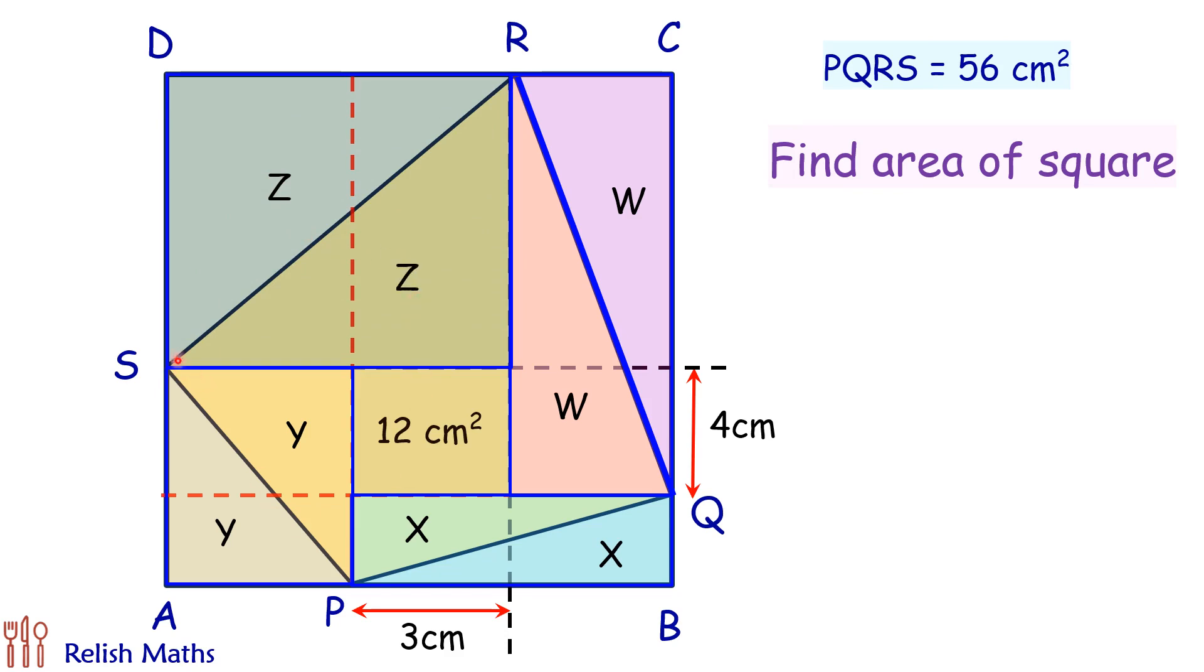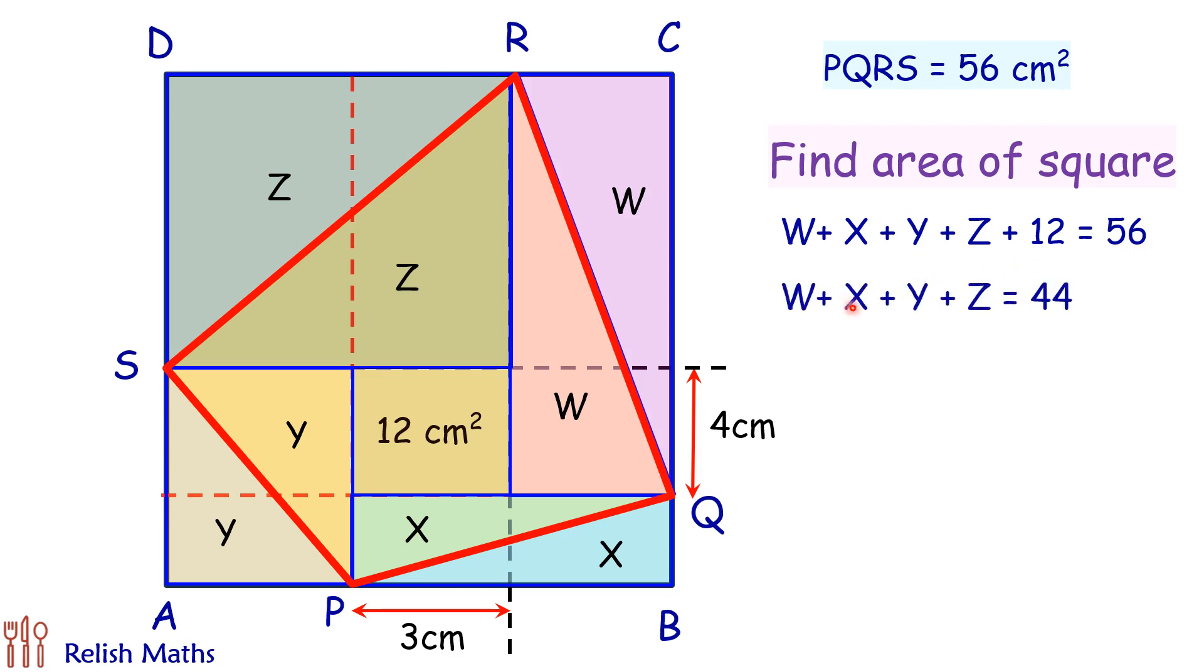Now if you look closely at our quadrilateral PQRS, its area will be w plus x plus y plus z plus 12. But this area is already given in question as 56, so equating this we'll get w plus x plus y plus z is 44. We'll use this information later on.